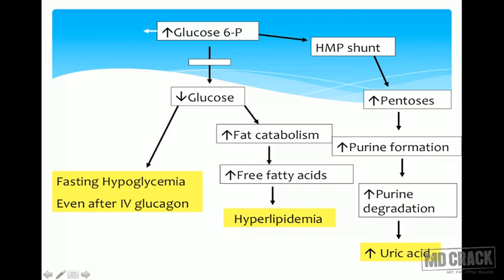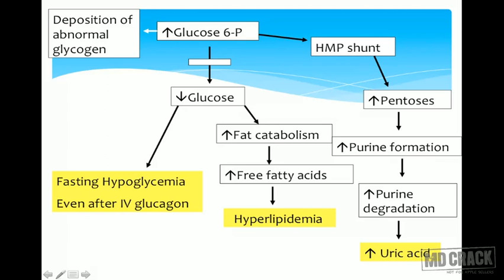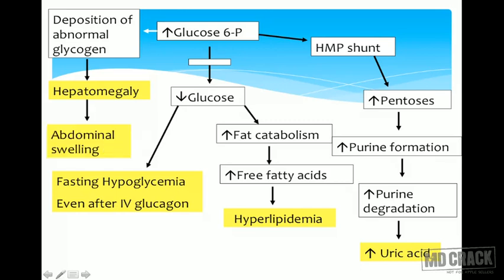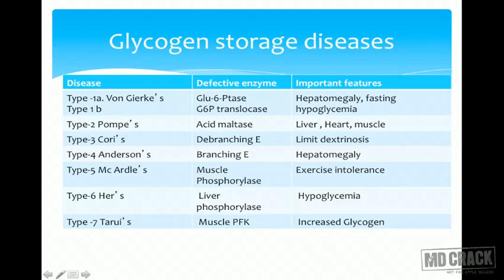The accumulation of glucose-6-phosphate also activates glycogen synthase, causing more glycogen to be deposited in hepatocytes. Since glycogen cannot be properly degraded to free glucose, abnormal glycogen accumulates in the cytosol of liver cells, resulting in a true glycogen storage disease and causing hepatomegaly — the abdominal swelling seen clinically.